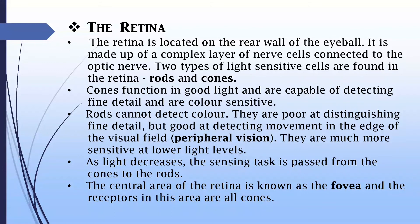The retina is located on the rear wall of the eye. It has two types of cells: rods and cones. Cones are color sensitive and help us differentiate between different shades of the same color. They function well in light and can detect fine details. Rods on the other hand are not color sensitive and cannot detect fine details. They work well in dim light and are good at detecting movement. As light level decreases, the sensing task is passed from cones to rods. The center portion of the retina is called the fovea. The number of cones is maximum at the fovea, and the number decreases while the number of rods increases when going outward from the fovea.